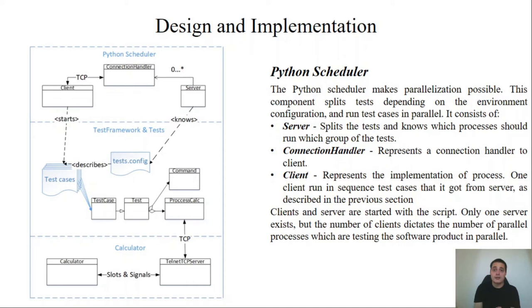The last component is Python scheduler. The Python scheduler component makes the parallelization possible. These components split tests depending on the environment configuration and run test cases in parallel. It consists of server, connection handler and client. Client server split the test and knows which client should run which test. Connection handler represents a connection handler to the client. It represents the connection handler to the client from server to client. And at the end we have client. It represents a process in process parallelization technique. One client can run in sequence the test cases which he got from server.